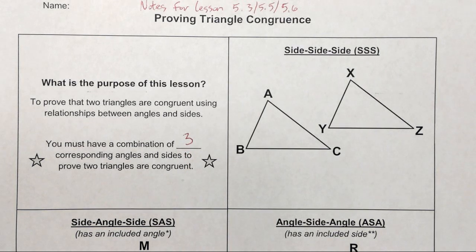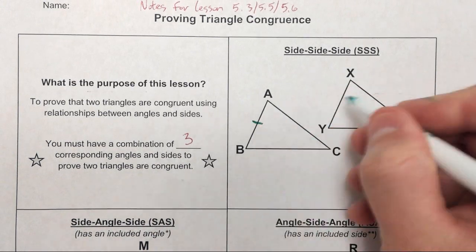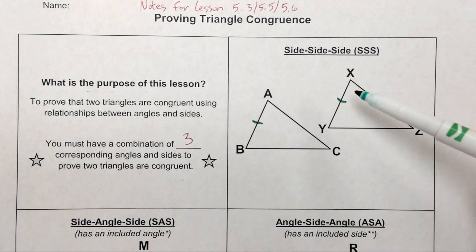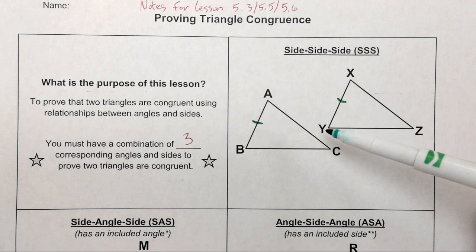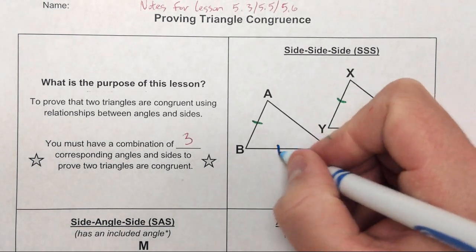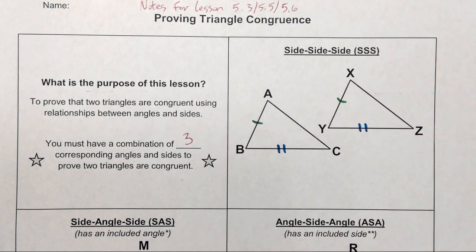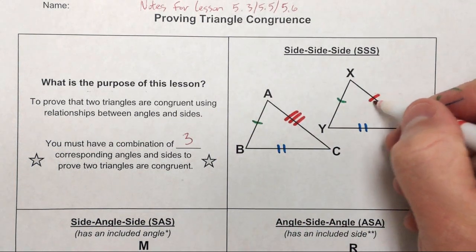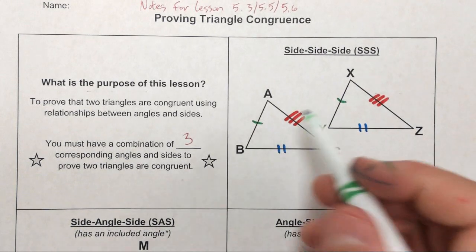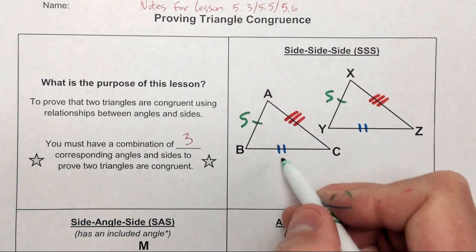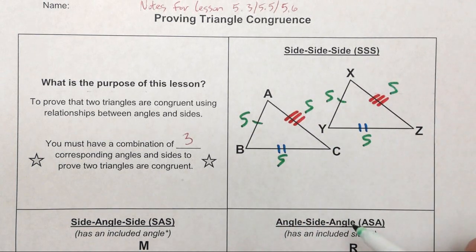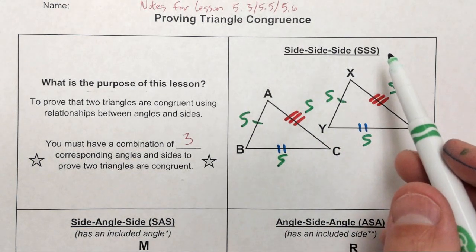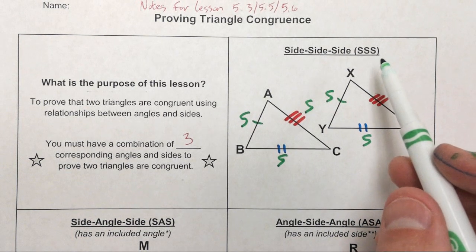So looking at the Side-Side-Side one, I'm going to make some markings here. I'm going to say that AB is congruent to XY. If the sub wants to pause the video at any time to let students catch up, feel free to do that or rewind it. I'm going to mark these two sides congruent to each other. I'm also going to mark side BC and YZ congruent to each other, and then lastly I'm going to assume that side AC is congruent to side XZ.